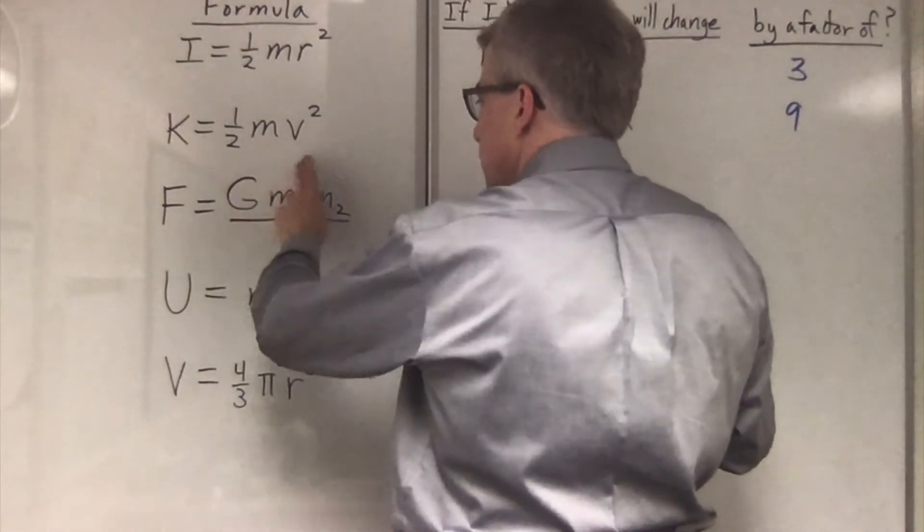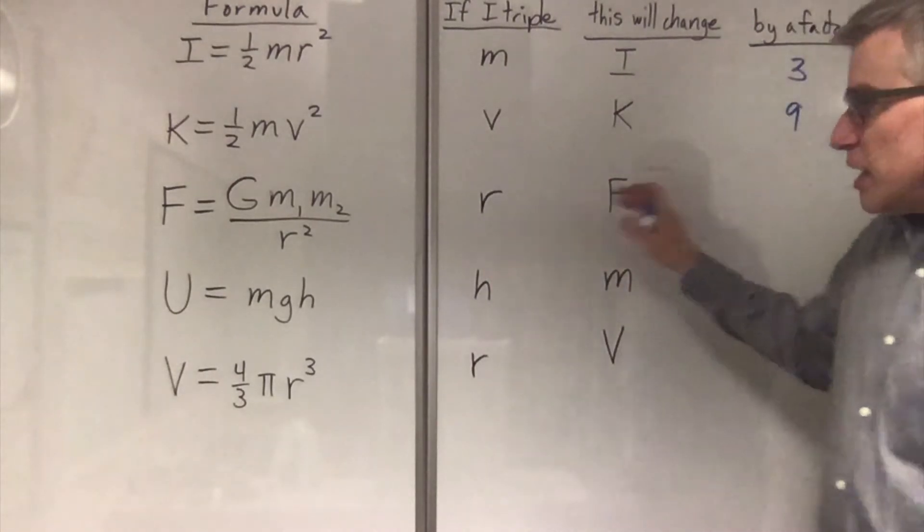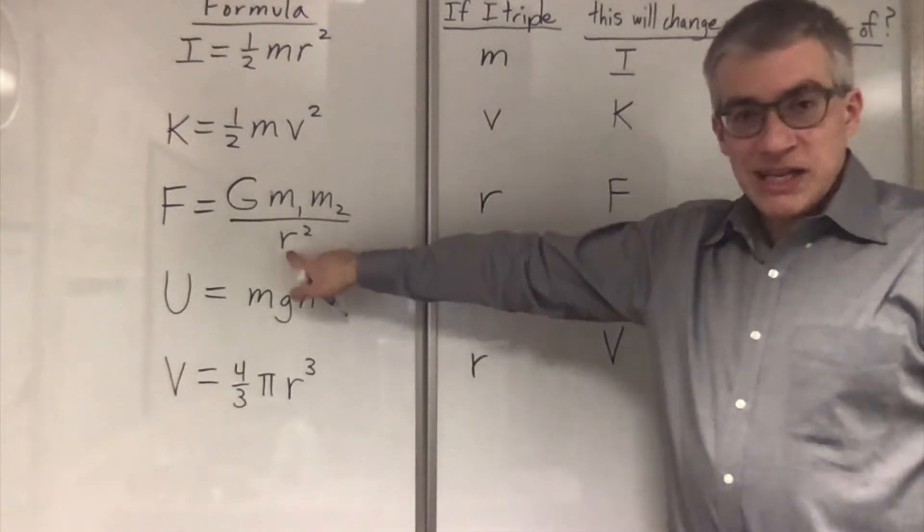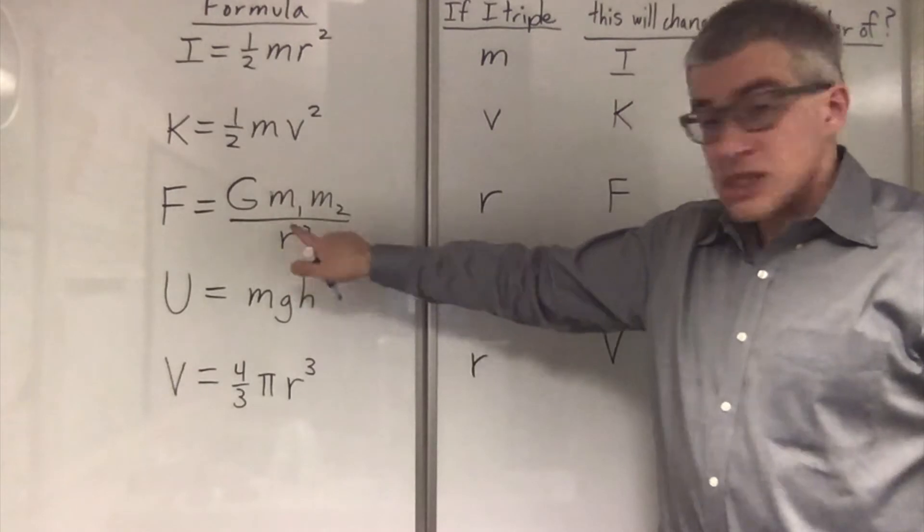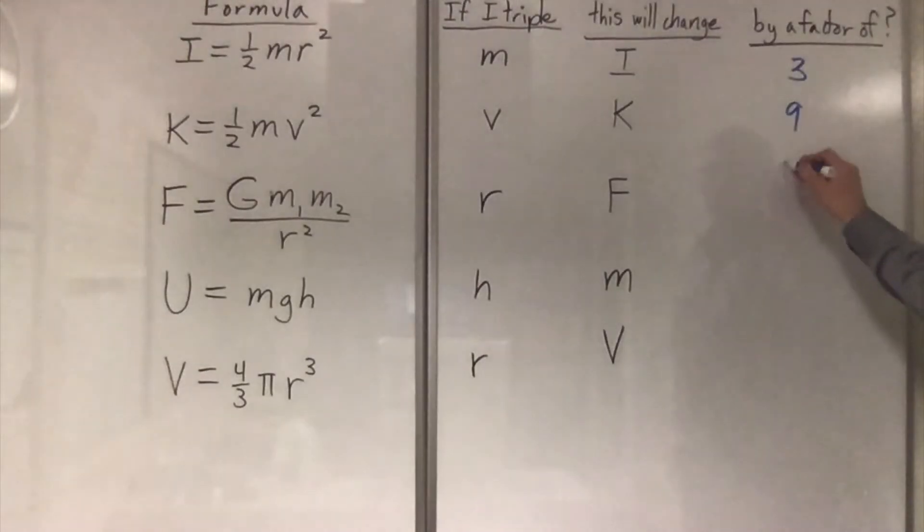Force is g m1 m2 over r squared. I'm going to change r, and I want to know what happens to f. If I triple r, the r is down here. So I get a 3 squared, which is 9, in the denominator. It's going to be 1 ninth.